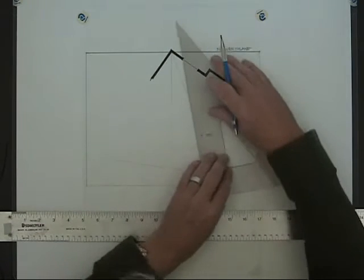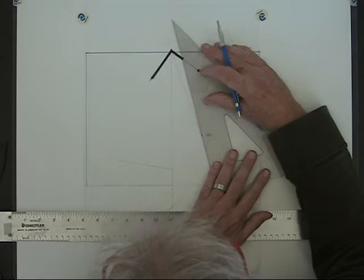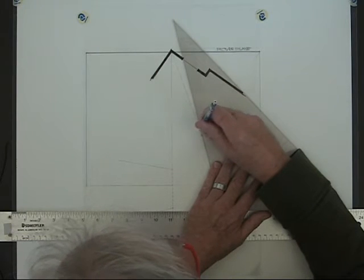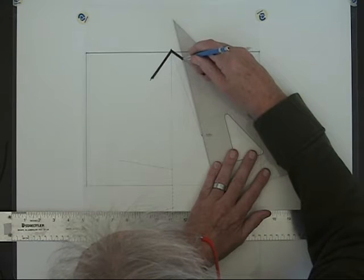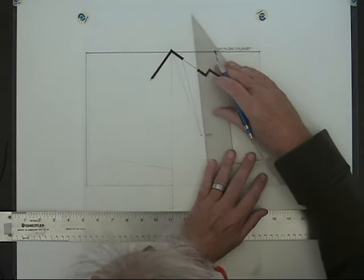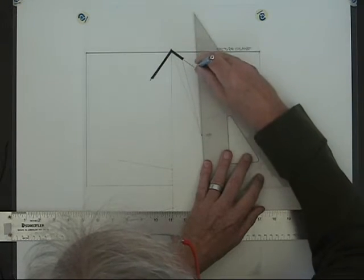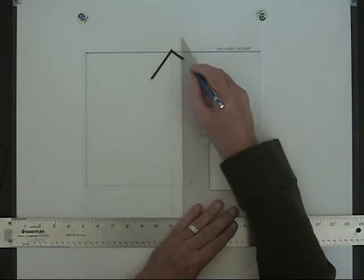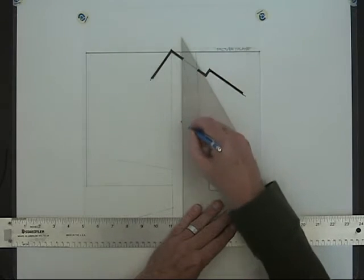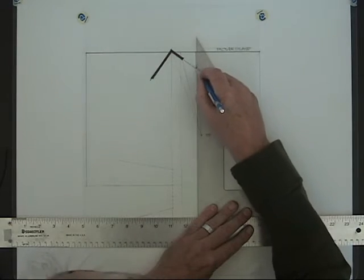First locating the location of the window on this right wall. From the station point I will draw a light guideline through the front corner of the window, the right side of the window, extending those lines up to the picture plane. And then dropping the lines lightly down to my perspective drawing.